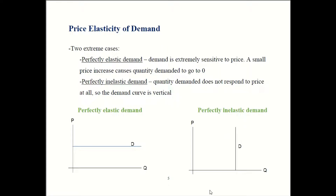The most extreme cases are perfectly elastic and perfectly inelastic. It's hard to think of a real example of either, but these extreme cases can help clarify your thinking. With perfectly elastic demand, if you change the price by even just one cent higher, people just don't buy at all — they buy zero. With perfectly inelastic demand, the price could go up from one dollar to a million dollars and people still buy just as much as before.